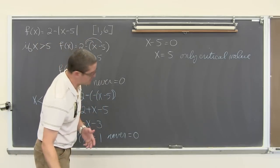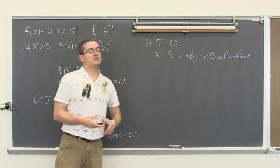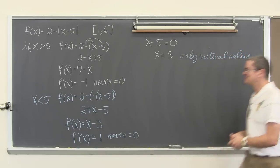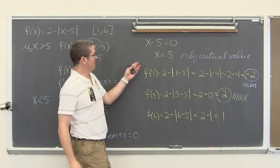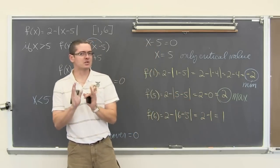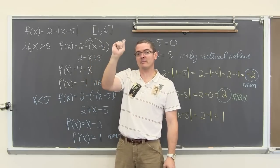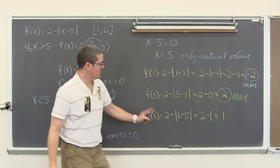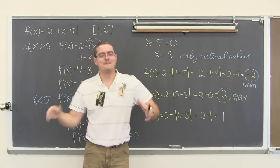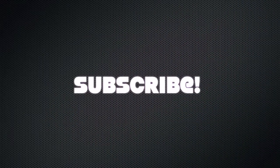Now let's plug in the endpoints and the critical value. Plugging in x equals 1, you get a y value of negative 2, which ends up being our absolute minimum value. Plugging in x equals 5, we get our max value — which should have been expected, because with the negative in front of the absolute value function the V-shape is opening down, so the sharp bend is our max value. At the other endpoint x equals 6, we got a y value of 1, which just wasn't small enough to be the absolute min. So I'm Mr. Tarrou — go do your homework!